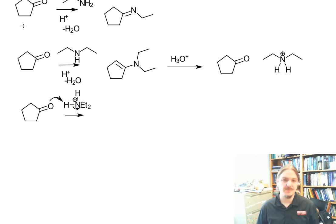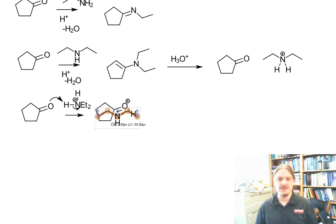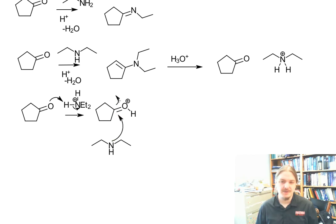We protonate the ketone, and now we have our amine. Our amine is a nucleophile, and it can attack the carbonyl carbon, breaking the carbon-oxygen pi bond.